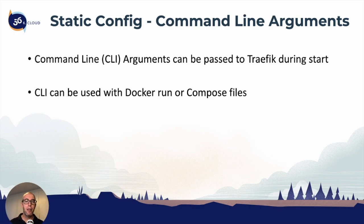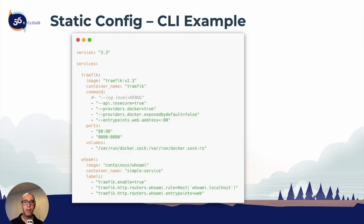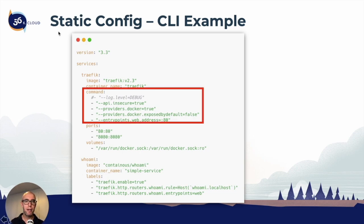Next are the command line arguments. In the previous section, we actually started Traefik with command line arguments. You can use command line arguments by running Traefik manually from the command line, or you can use them inside a compose file. Here's an example of a command line configuration in Docker Compose — notice the command section with --api.insecure=true. It's broken out for easier readability and maintenance. Everything available in the configuration file is also available via command line or environment variables.